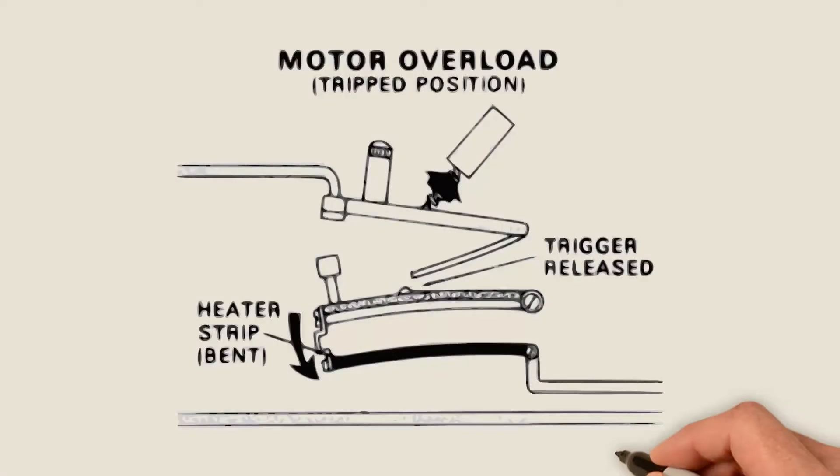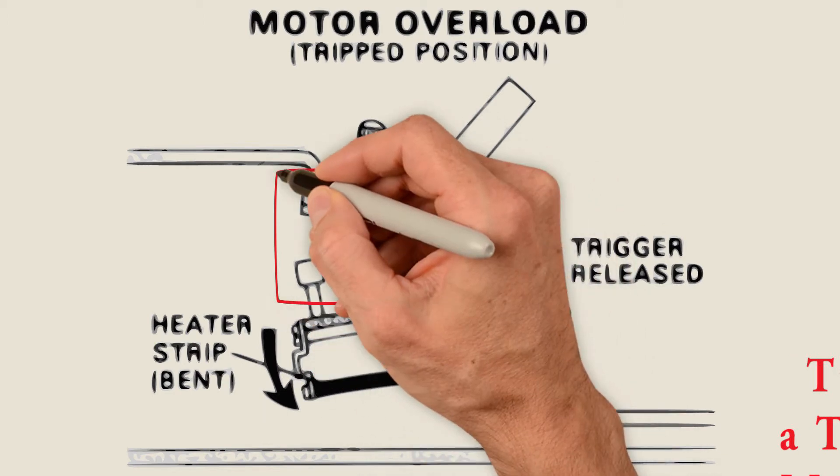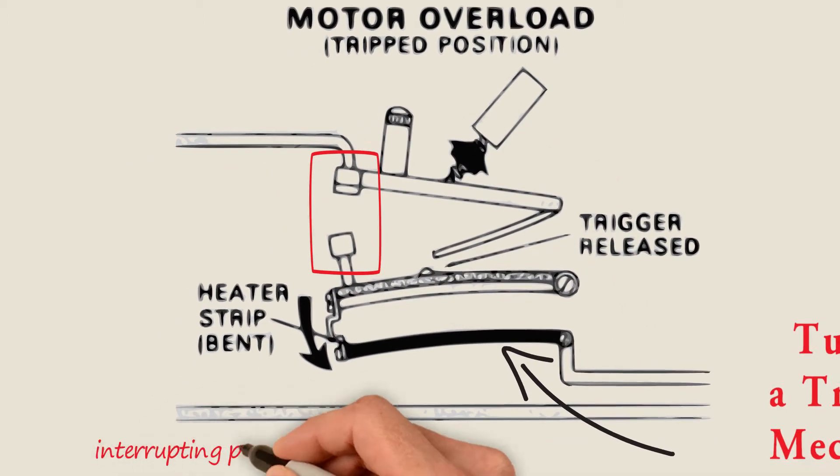When an overload occurs, the heat causes the bi-metal to deflect and turn on a tripping mechanism which opens a set of contacts in the control circuit, interrupting power to the coil and opening the power contacts.